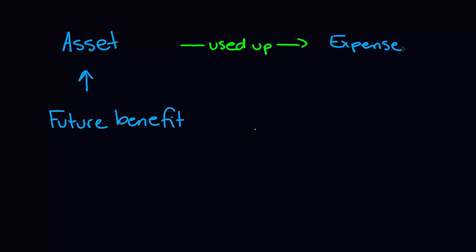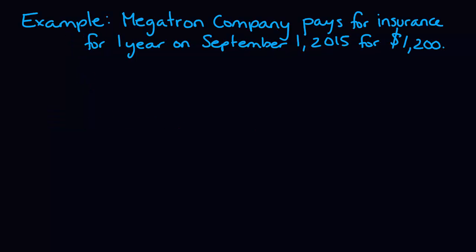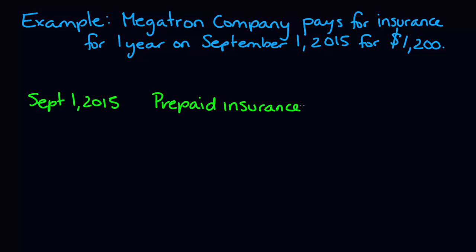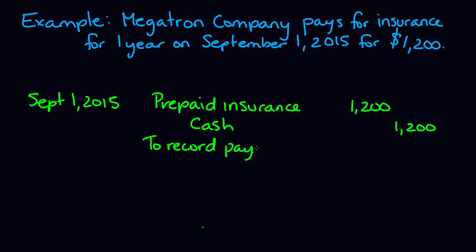So let's look at an example. Megatron Company is paying for insurance for one year on September 1, 2015 for $1,200. When Megatron Company purchases that insurance, our journal entry will be: date September 1, 2015 — debit prepaid insurance, the asset account, for $1,200 and credit cash for $1,200. Our description will be to record payment of insurance.